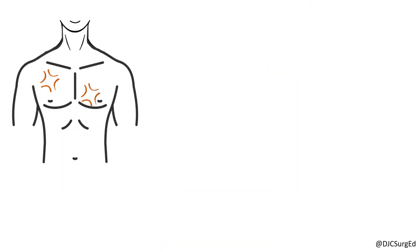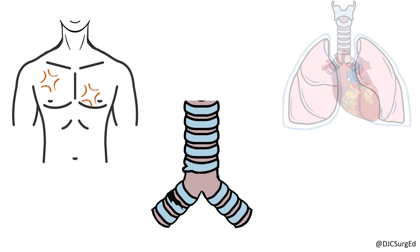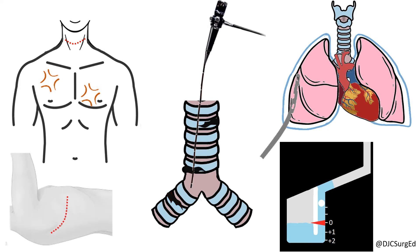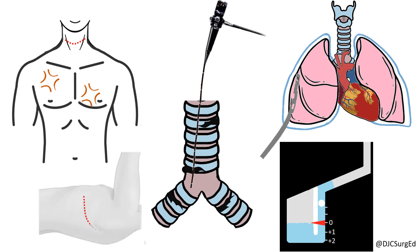Tracheobronchial tree injuries must be suspected in thoracic trauma when there is a large air leak after chest tube placement or extensive subcutaneous emphysema. Diagnosis should be made immediately with bronchoscopy and a definitive airway secured. For injuries to the proximal trachea, a low collar incision can be made. For distal trachea or right main stem injuries, a right posterior lateral thoracotomy is performed. Left main stem injuries can be accessed via a left thoracotomy. Tracheal injuries should be repaired with interrupted, absorbable sutures and covered with a flap, either an intercostal or strap muscle.